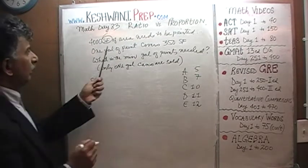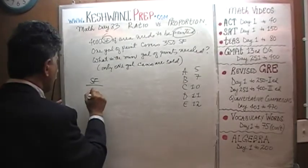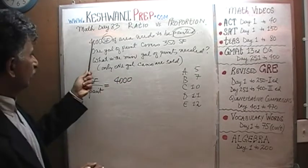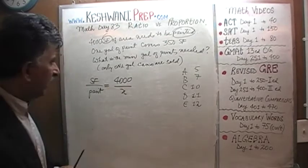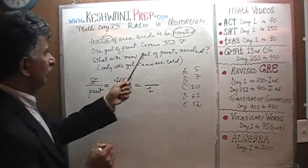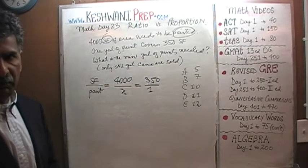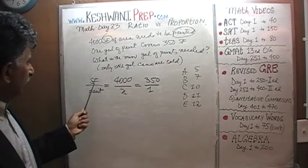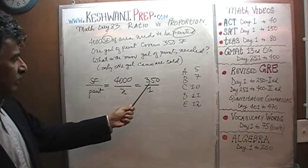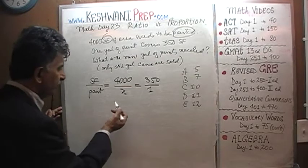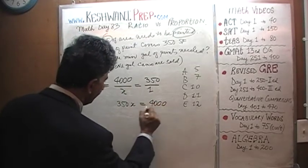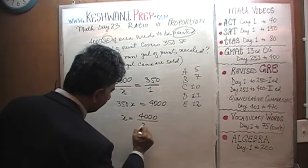Square feet of area needs to be painted — that's the first item. We are told we have to cover 4,000 square feet. The question is how many gallons of paint we need to buy. We are told that one gallon of paint covers 350 square feet. Just put them in the order that they appear in the question. And therefore you solve for x: 350 times x equals 4,000, so x equals 4,000 over 350.